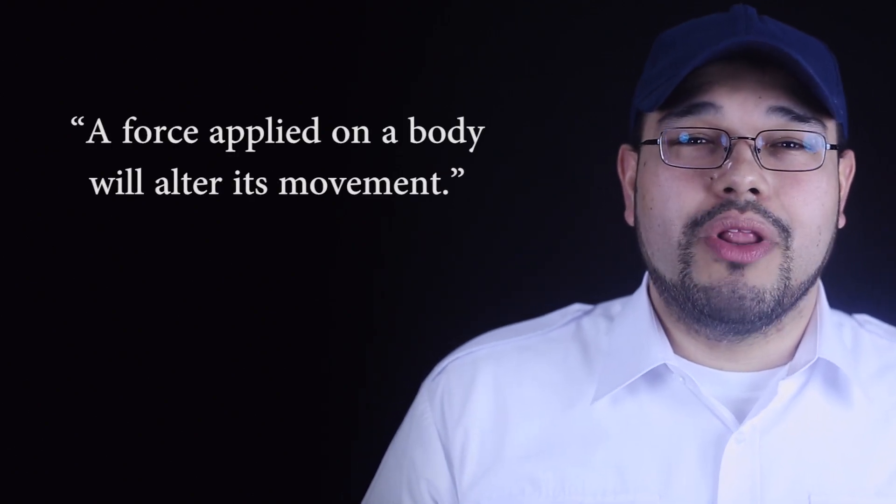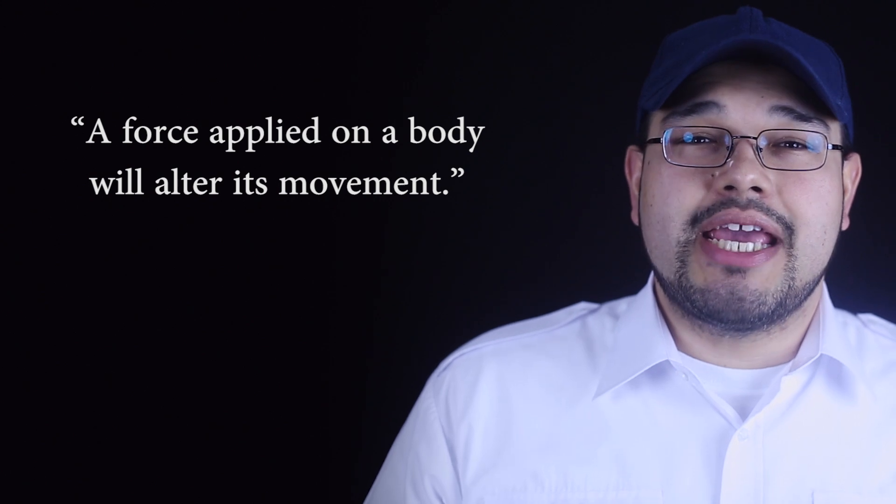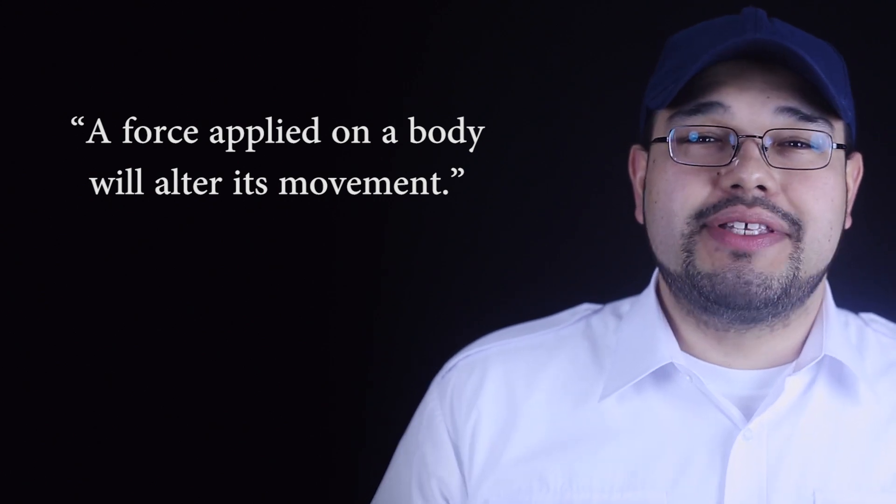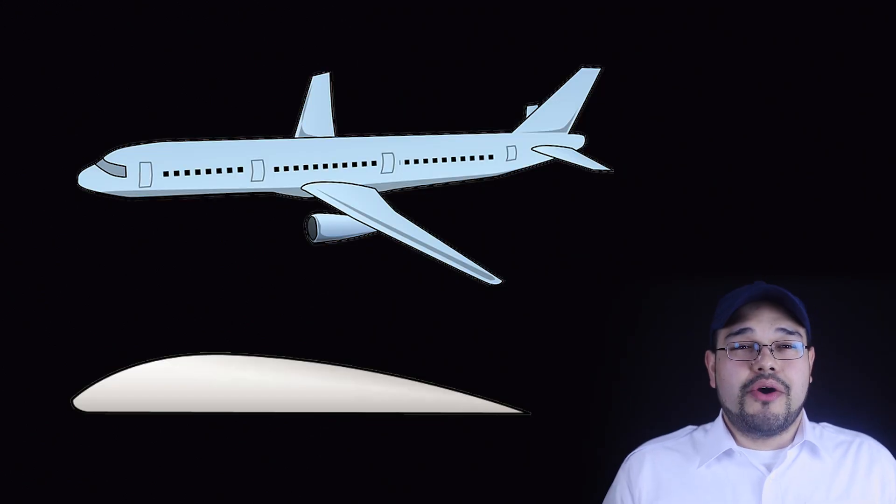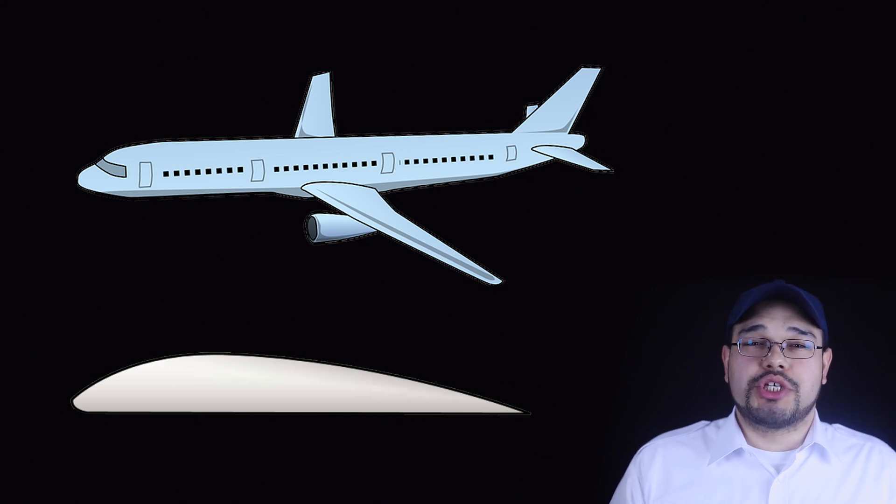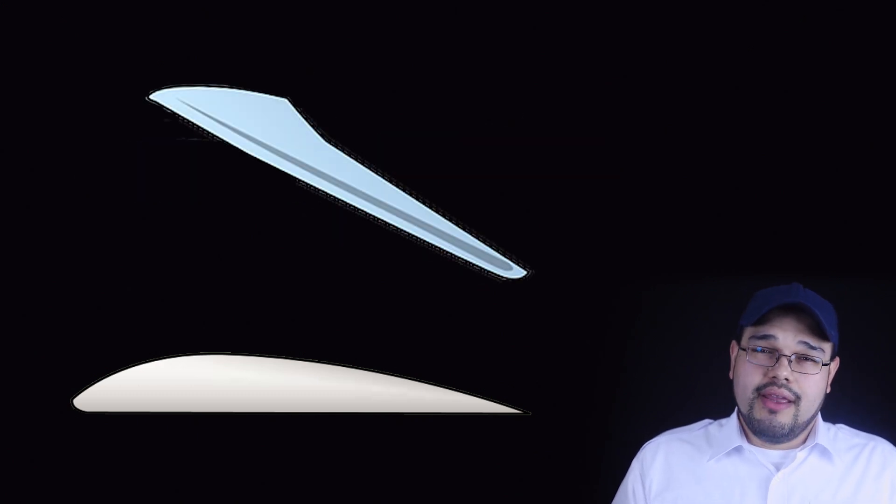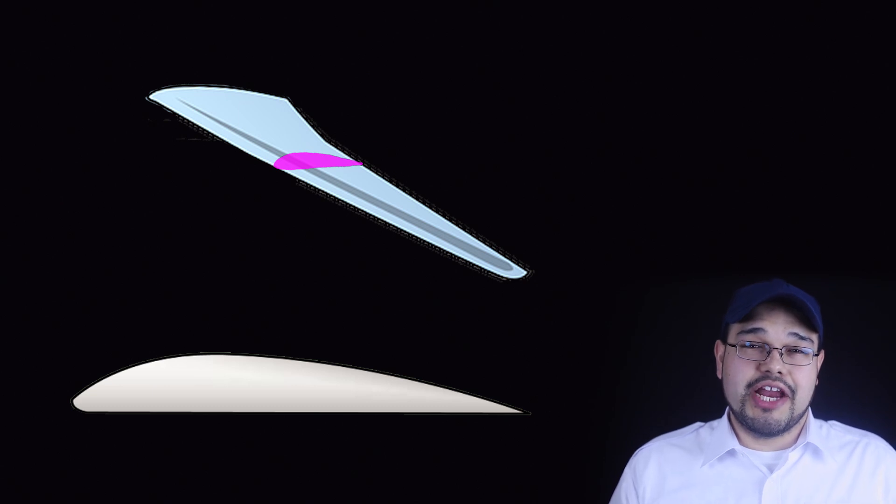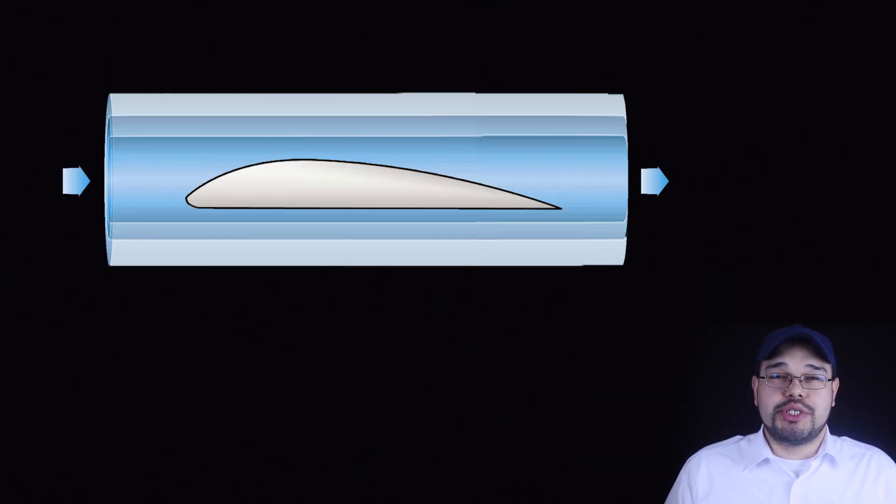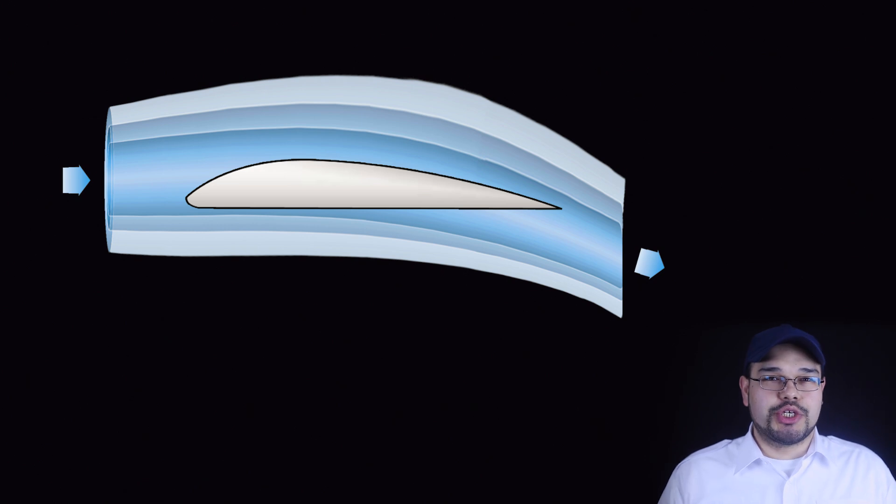Next we have Newton's second law. It says a force applied on a body will alter its movement. So in this case we have the wing, specifically referencing the airfoil. Now side note, an airfoil is just a cross-section shape of a wing. So take a wing, cut it, the cut outline is the airfoil. So the airfoil moving through the air changes the air's velocity and direction in accordance with Newton's second law.